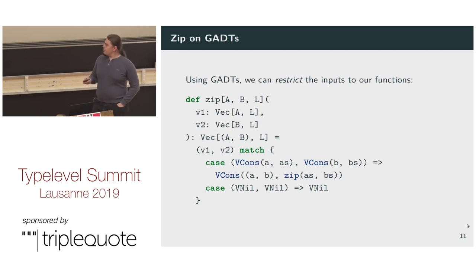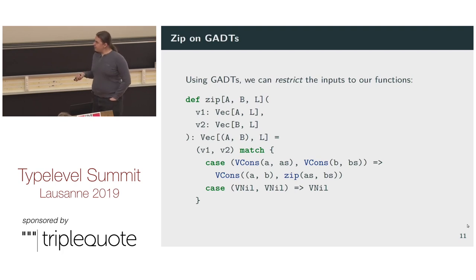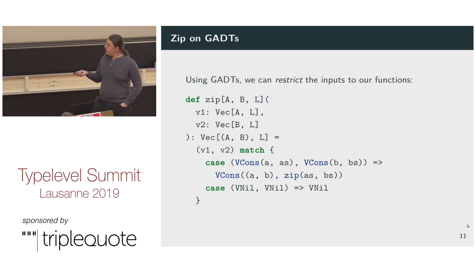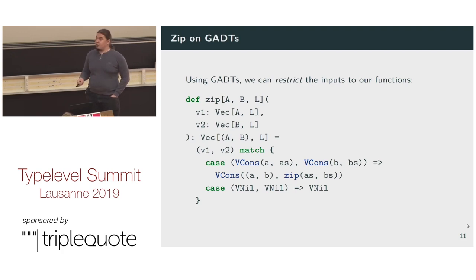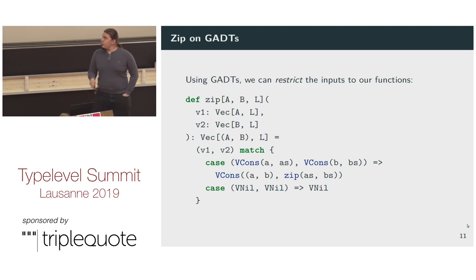We can restrict the inputs to functions. Here we have a zip function defined on vectors, and both Vecs must have length L, so we simply cannot pass mismatched lengths — problem solved. Another interesting thing is that those cases form an exhaustive match. With normal lists we would need to consider cons-nil and nil-cons cases, but here if we have VCons, the length must be a successor of something and not zero, so we cannot have a nil. The pattern exhaustivity checker didn't know that previously — it was a longstanding bug in Scala and Haskell — but it is fixed in Dotty.